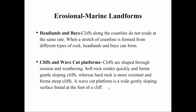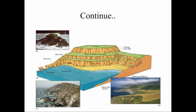A wave-cut platform is a wide, gently sloping surface found at the foot of a cliff. As you can see in this image, this is the sea terrace and the small surrounding hillocks near the sea area. These landforms include sea caves, a sea arch, a sea stack, wave-cut platforms, and the sea cliff.